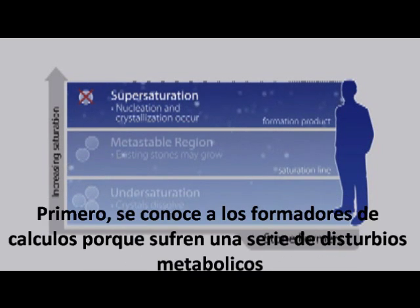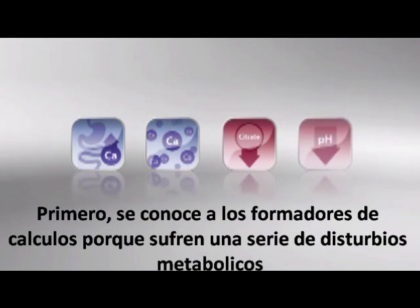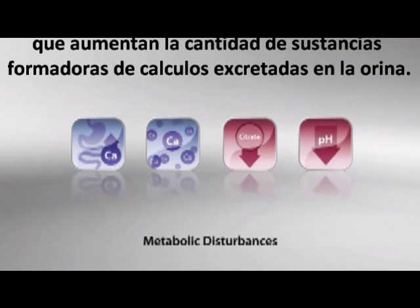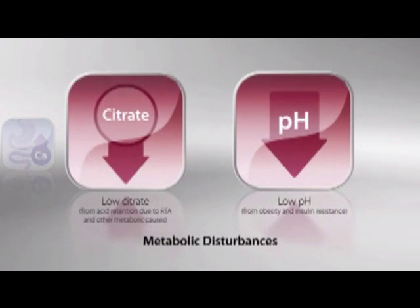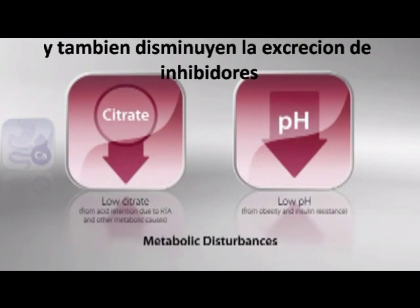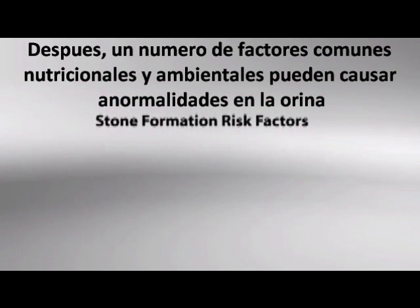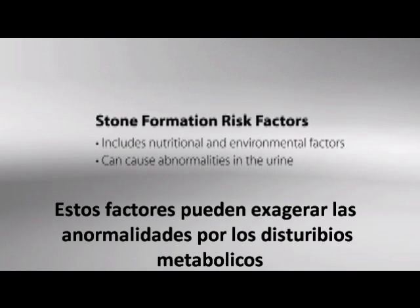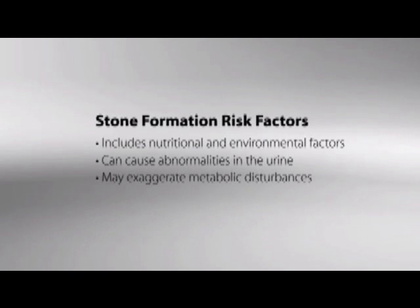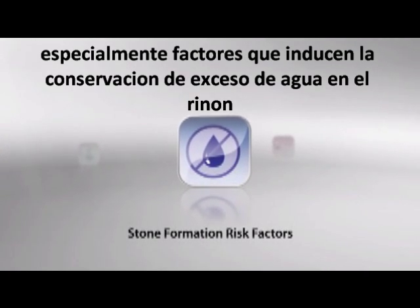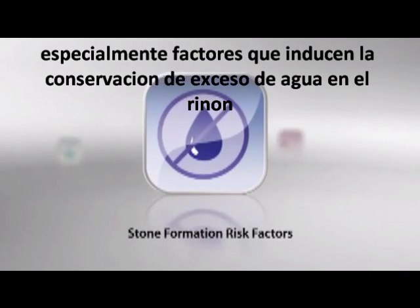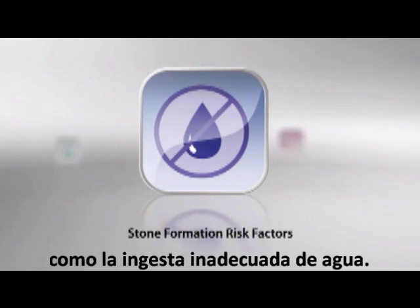There are two reasons for this. First, stone-formers are known to suffer from a variety of metabolic disturbances that increase the amount of stone-forming substances excreted in the urine and also decrease the excretion of inhibitors. Second, a number of common nutritional and environmental factors can cause abnormalities in the urine. These factors may also exaggerate underlying abnormalities due to metabolic disturbances. Environmental stresses play a significant role in stone disease, especially factors that trigger excess water conservation in the kidney, such as inadequate fluid intake.